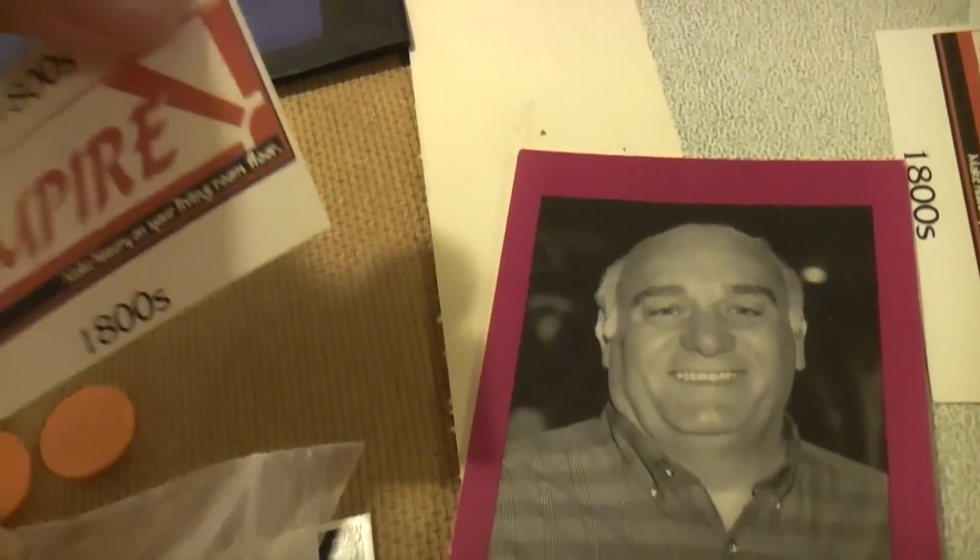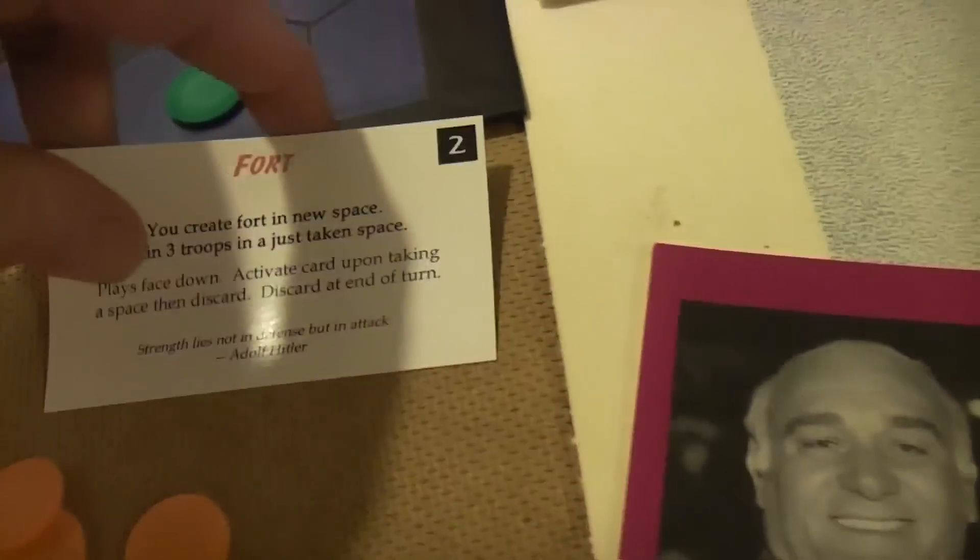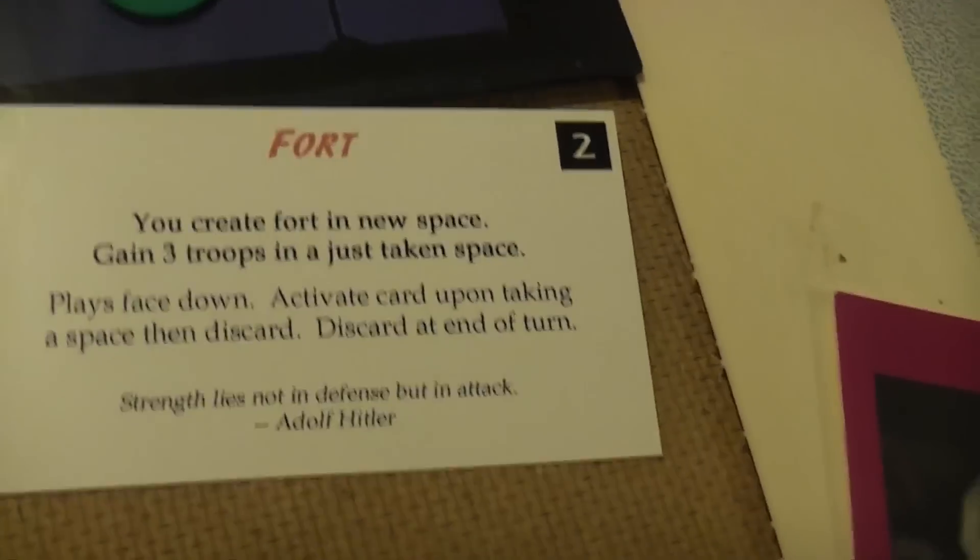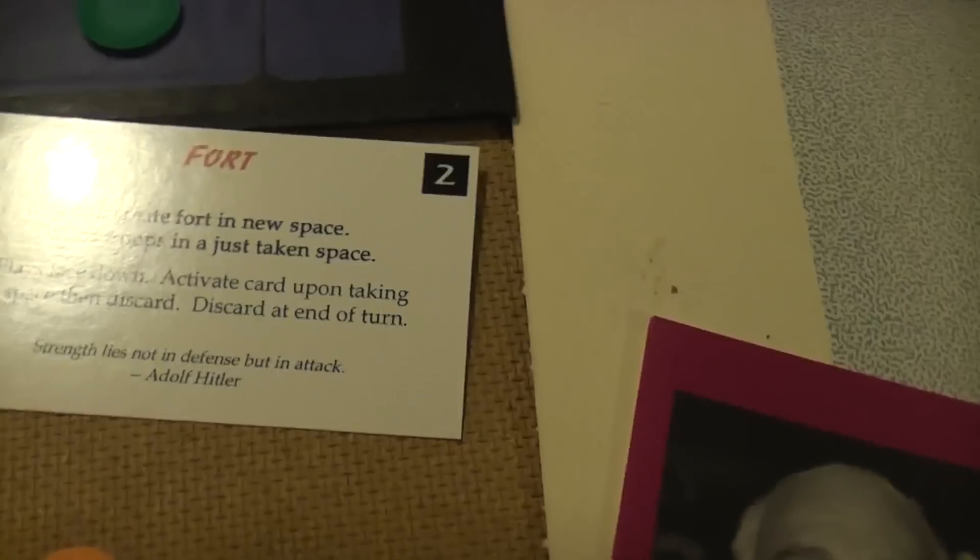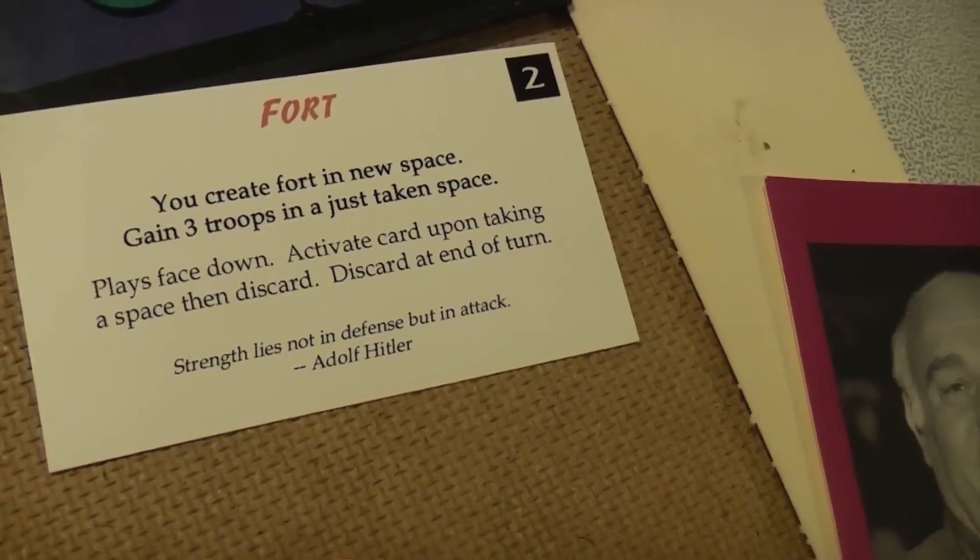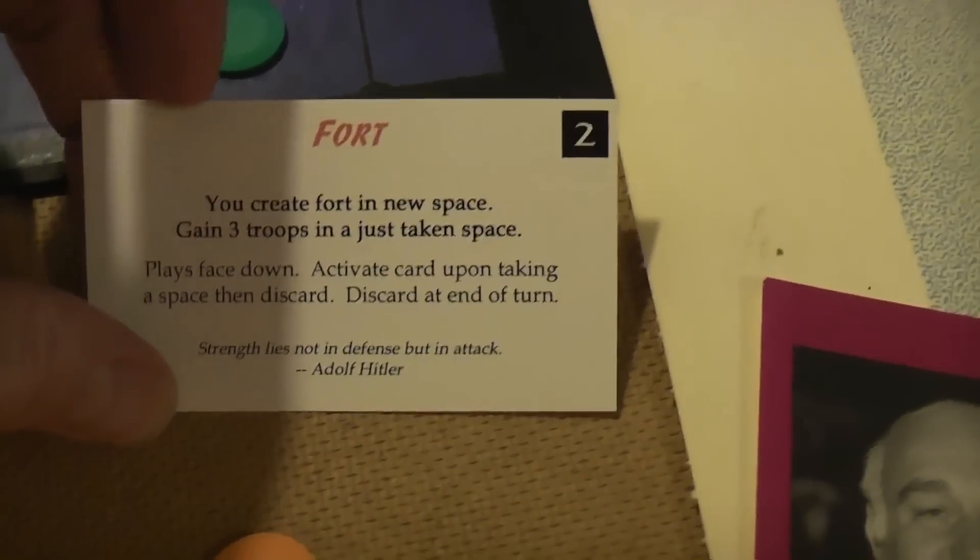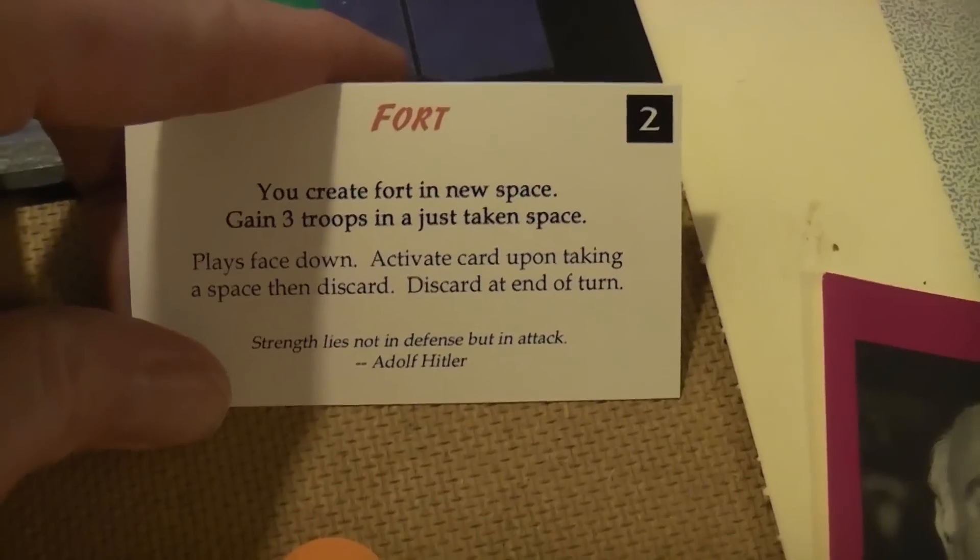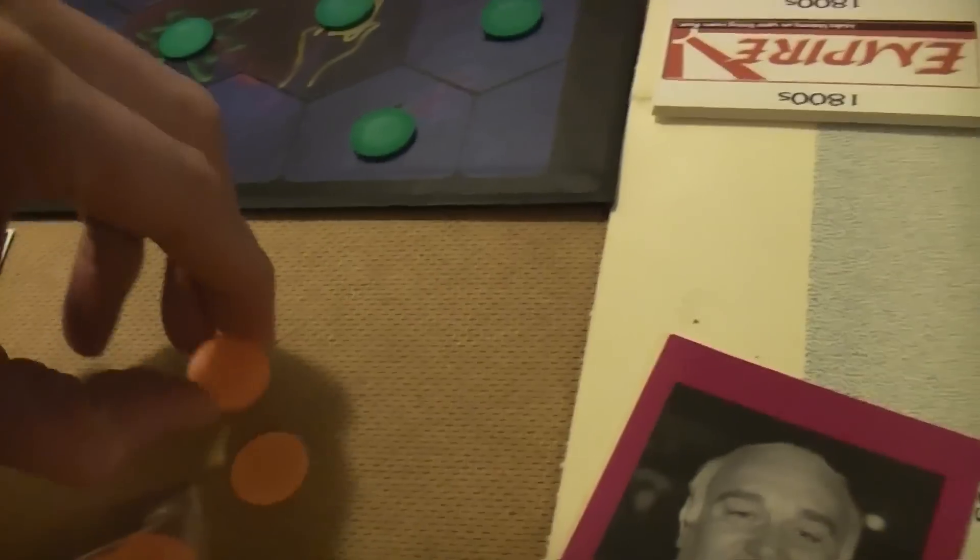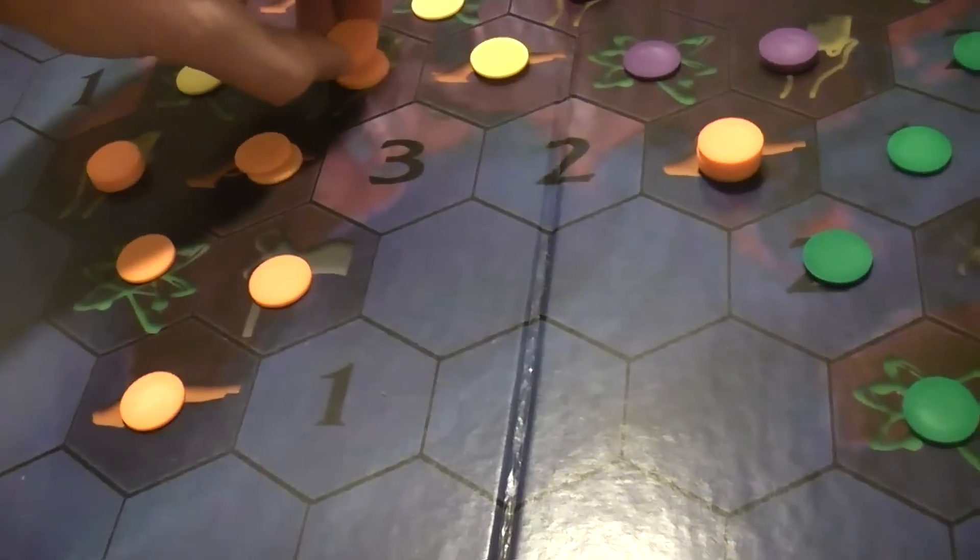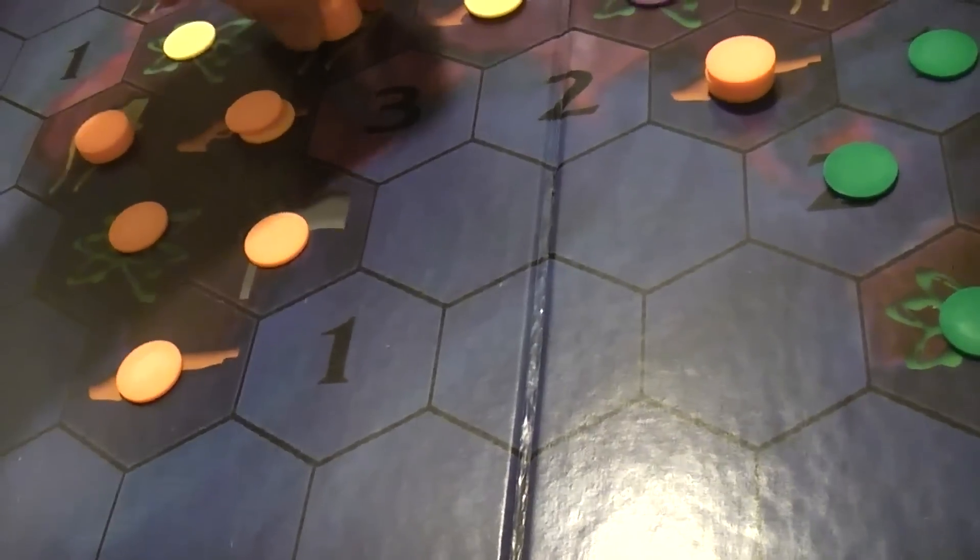Sonny has a trick up his sleeve. He's going to reveal this card he played face down. Face down cards you just play in front of you, and then you can turn them up at a certain point. Activate card upon taking a space, then discard. He took a space. Now he's going to get to put three troops there. So now he's got a healthy stack of five. I think he'll be able to hold that space.